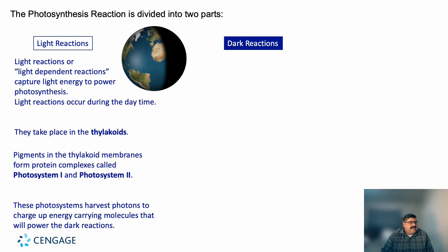In the light reaction, or light-dependent reaction, captured light energy powers photosynthesis. The light reaction occurs only during the daytime and takes place in the thylakoid. Pigments in the thylakoid membrane form protein complexes called Photosystem I and Photosystem II. These photosystems harvest photons to charge up energy-carrying molecules that power the dark reactions. Interestingly, Photosystem II actually occurs first — Photosystem I was simply discovered first.